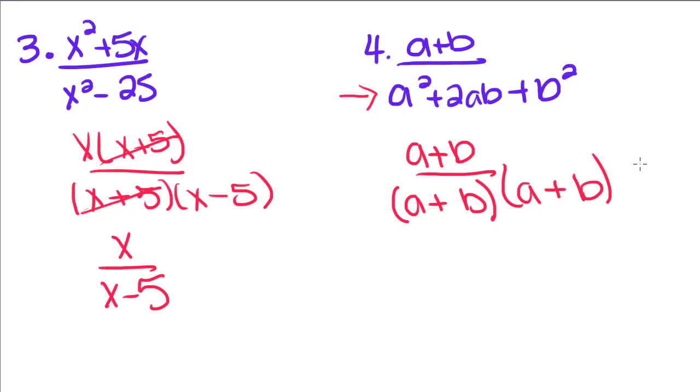This a plus b is only going to cancel with one of these a plus b's. So we're left with a 1 on top and an a plus b on the bottom. That's all for simplifying fractions. Make sure you come back and watch our next video where we're going to talk about multiplying fractions.